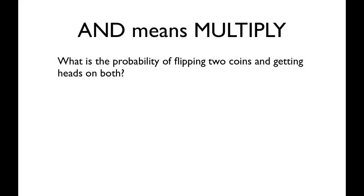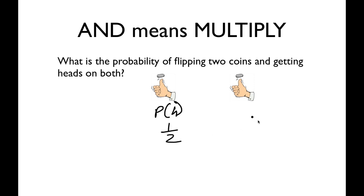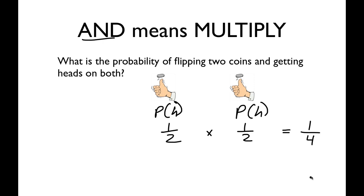Probability-wise, when you see the word 'and,' you're talking about an intersection — that means multiply. For example: what's the probability of flipping two coins and getting heads on both? The probability of getting heads is 1/2, and the probability of getting heads on the second coin is also 1/2. Because I want this outcome and this outcome, I multiply: 1/2 times 1/2 gives a probability of 1/4.